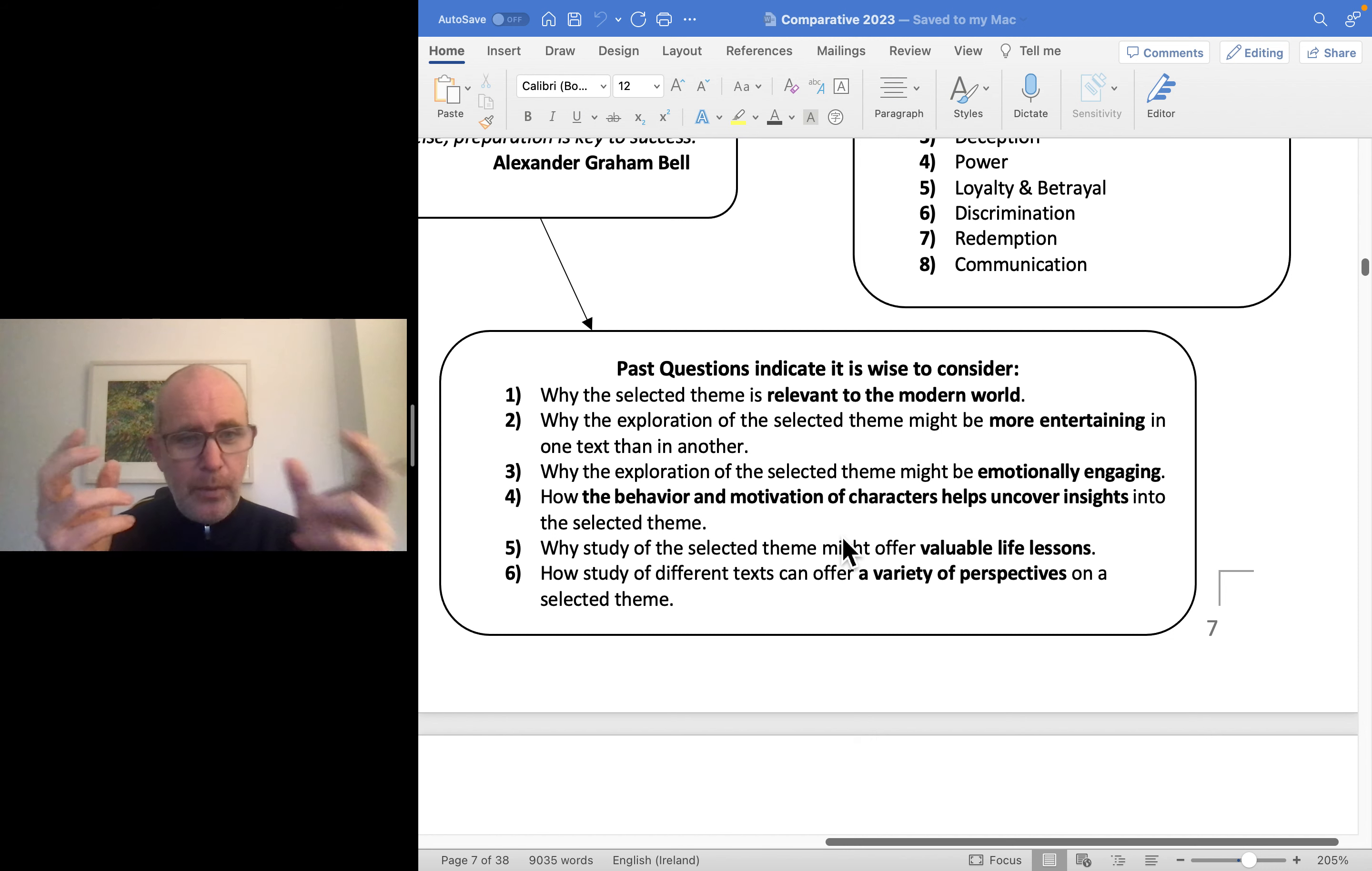When doing your preparation, think whether your chosen material would allow you to talk about the following: Why your theme might be relevant to the world we live in today? Why one text might address your theme in a way which is more entertaining - that was a hard question, more of a literary genre question. And why your theme might be emotionally engaging - what does that mean? It grabs you, moves you, angers you, forces you to look at the world from different perspectives, surprises you.